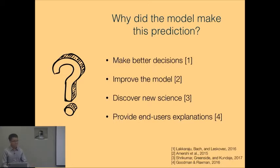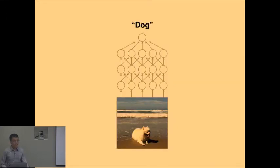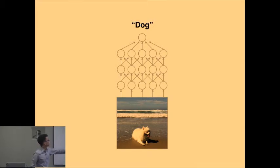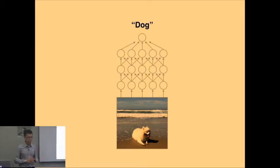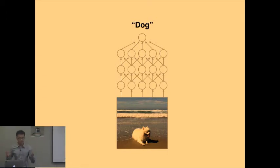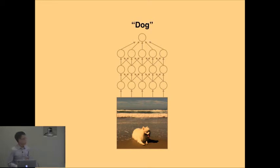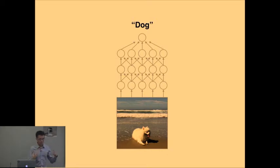Just to ground us in a concrete example, let's say we have an image — that's a dog — this is the raw input, and it goes through your favorite model, some neural net or whatever. The model comes out with the label 'dog.' So what do we want to do? We want to try to understand why did the model say this is a dog — can we explain the reasoning that the model did?